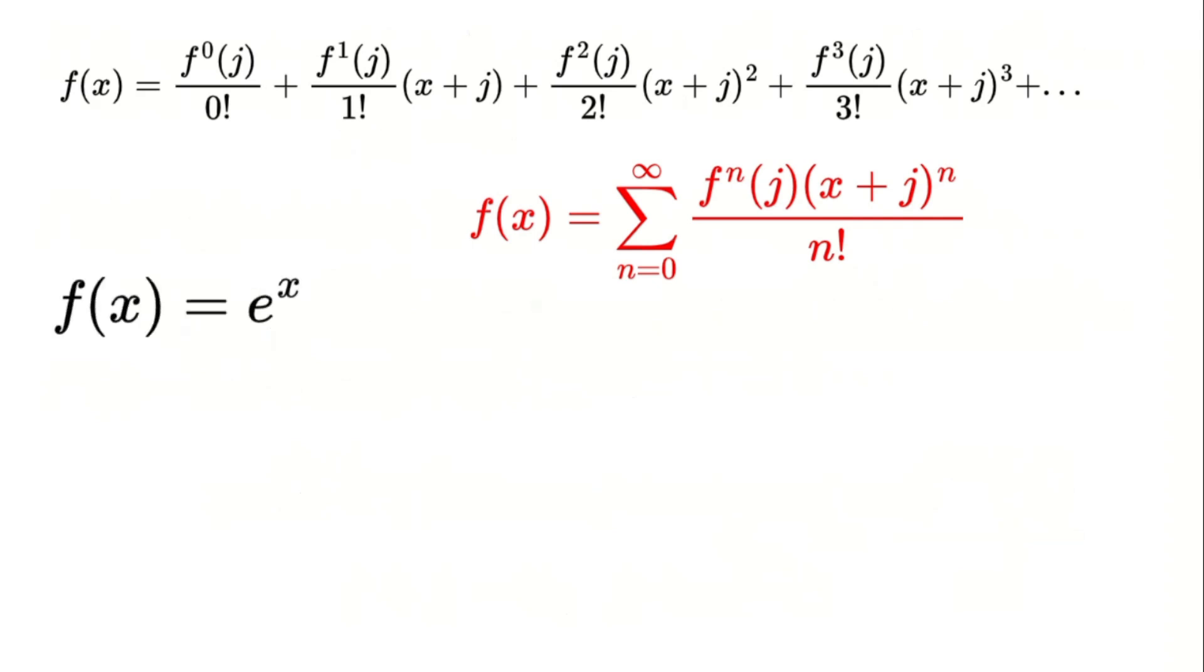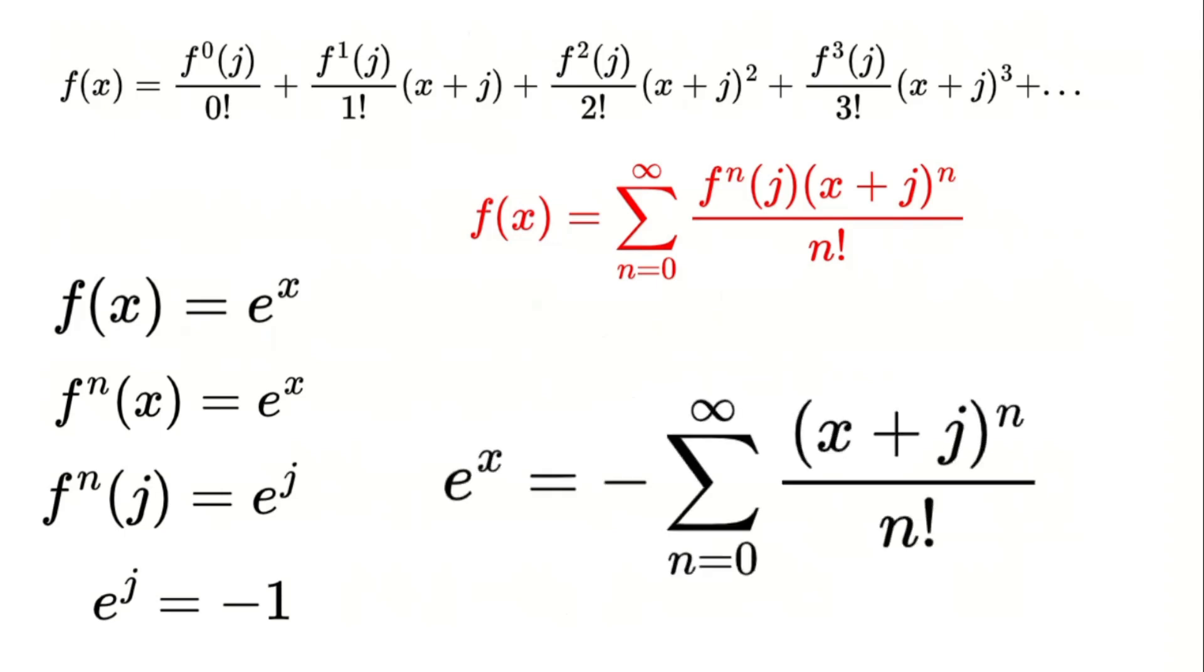To illustrate, consider the function e raised to the power of x. This function is unique because all its derivatives are identical to the original function. When we substitute j into each derivative, we observe that every term in the series involves the exponential of j. In the virtual number system, the exponential of j simplifies to negative 1. Using this property, the virtual Taylor series for e raised to the power of x can be fully constructed.